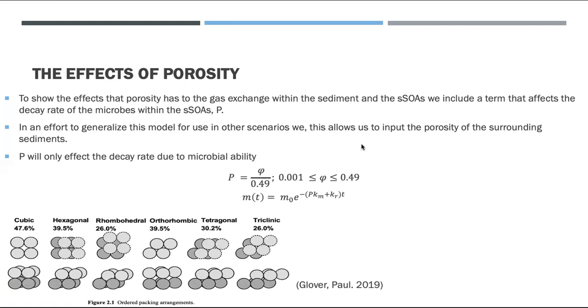Porosity in this beach sediment was calculated to be 49%, but in theory it should only be 47.6% in clump sediments as seen in Figure 2.1 of packed arrangements. You can see the cubic is 47.6% theoretically, and that's the highest it'll go. So they had a 1.4% margin of error in calculating the porosity for this beach surface.